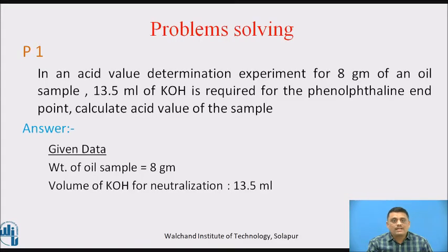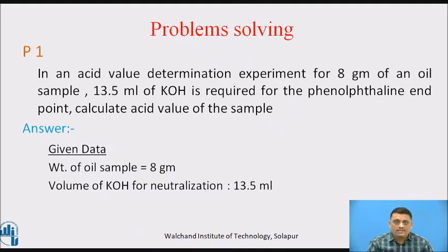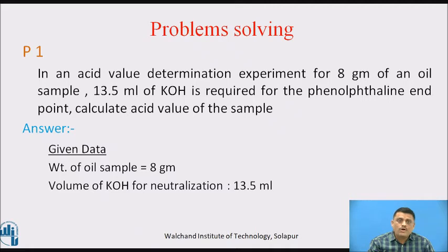Now we will apply the theoretical knowledge to determine acid value and saponification value of a given sample. Problem number 1: In an acid value determination experiment, for 8 grams of an oil, 13.5 ml of KOH is required for the phenolphthalein endpoint. Calculate the acid value of the sample. The given data: weight of the lubricant sample is 8 grams, and volume of KOH consumed for neutralization of mineral acids is 13.5 ml.